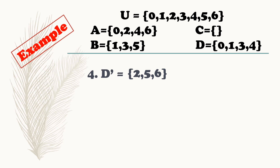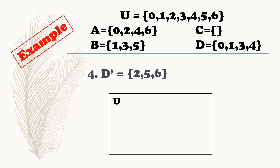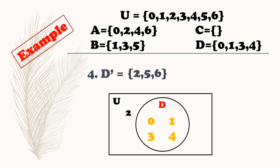Represent ulit natin sa Venn diagram. So ano yung nasa loob ng bilog? Set D. What are the elements? 0, 1, 3, 4. Yung nasa labas ng bilog natin, that is the complement of set D: 2, 5, 6.